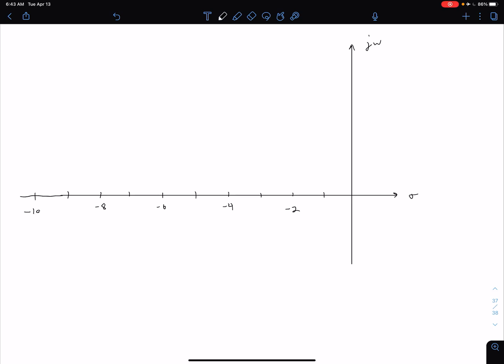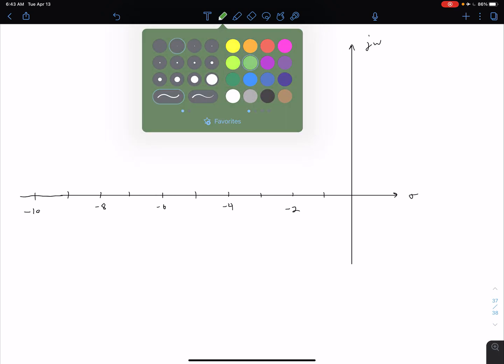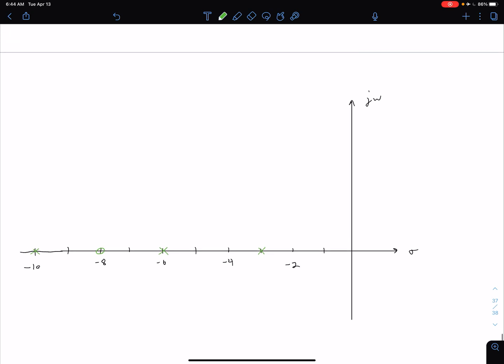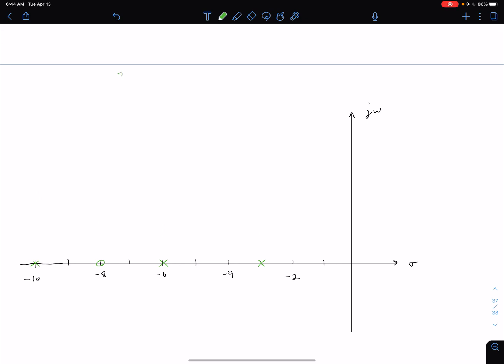Okay, so we know that we had a zero at negative eight, so let's put our open loop zero at negative eight. We had open loop poles at three places, at negative three, at negative six, and at negative 10. And so what we can see from this is that we have three open loop poles and one open loop zero. So what that tells us is we have two infinite zeros, or in other words, we're going to have two asymptotes.